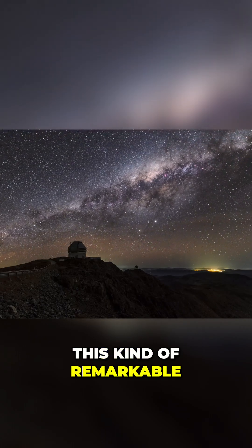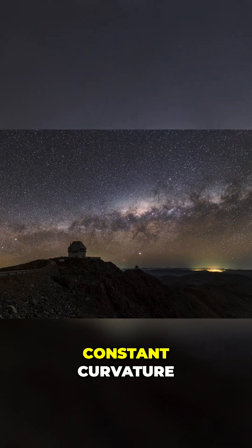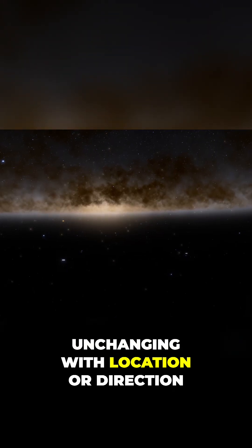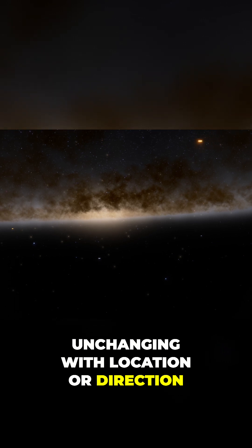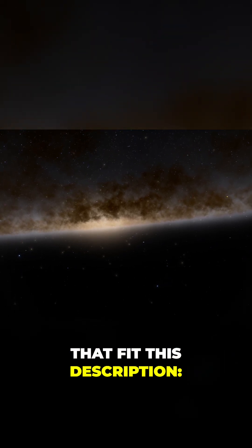This kind of remarkable uniformity is only possible if space has a constant curvature, unchanging with location or direction. And that leaves us with just three geometries that fit this description.